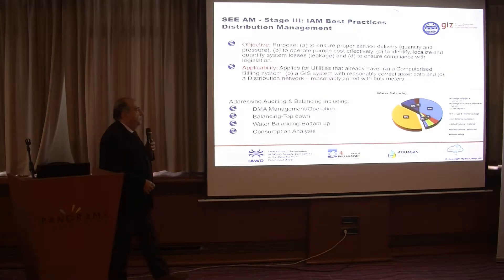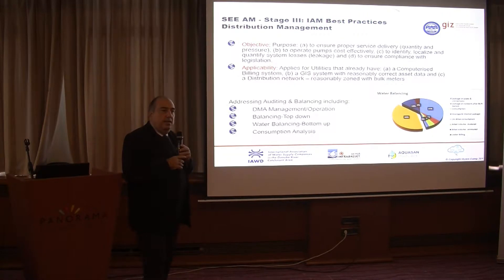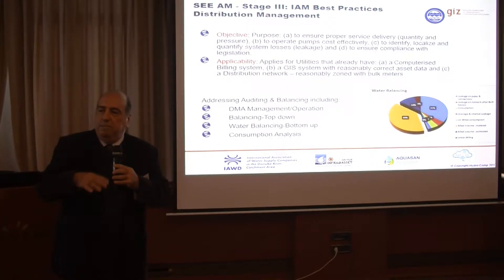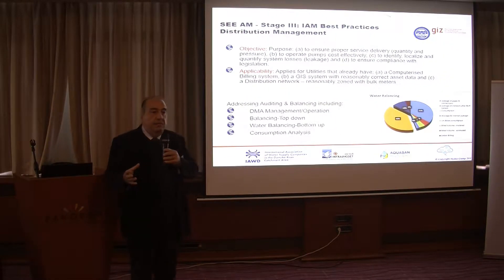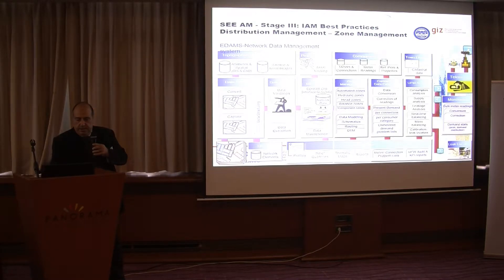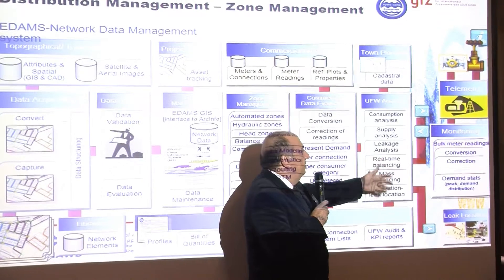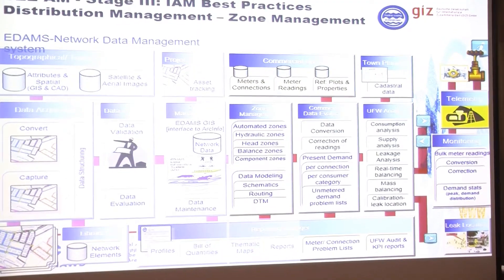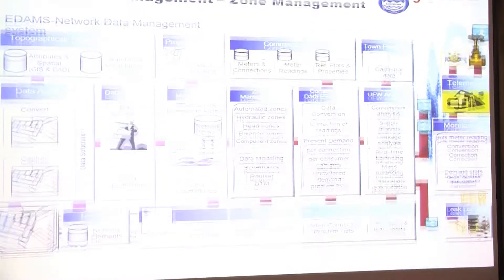We have a nice infrastructure we call non-revenue auditing and balance — a separate subsystem with a specific purpose to manage DMAs. You would have built your asset registry properly, and now we're putting in the infrastructure to capture and control our DMAs. There is a separate module for zone management, for commercial data evaluation, and for unaccounted-for water analysis. The unaccounted-for analysis module and non-revenue is the heart of the system. Part of it is what we call supply analysis and zoning.